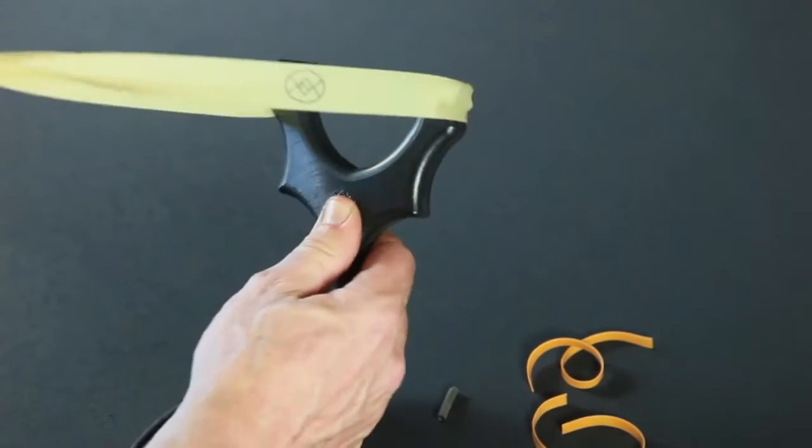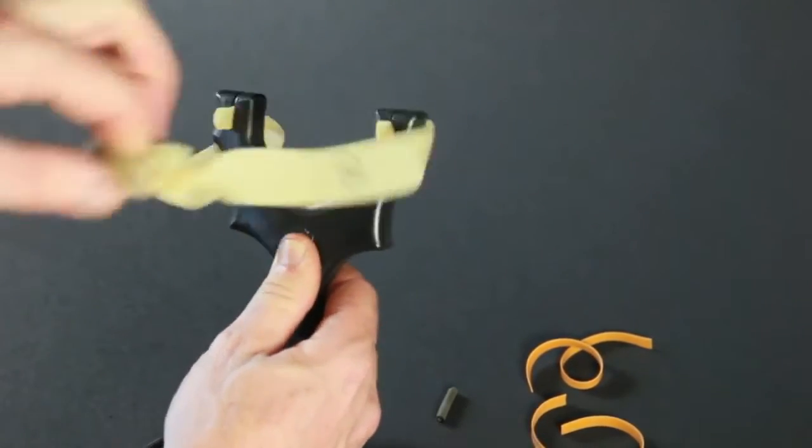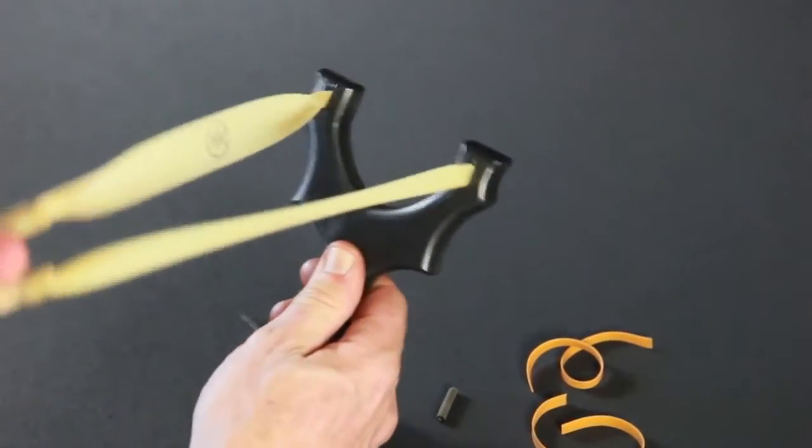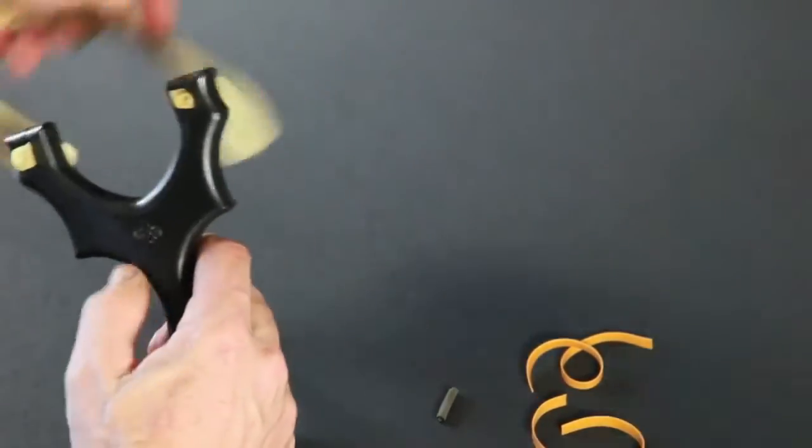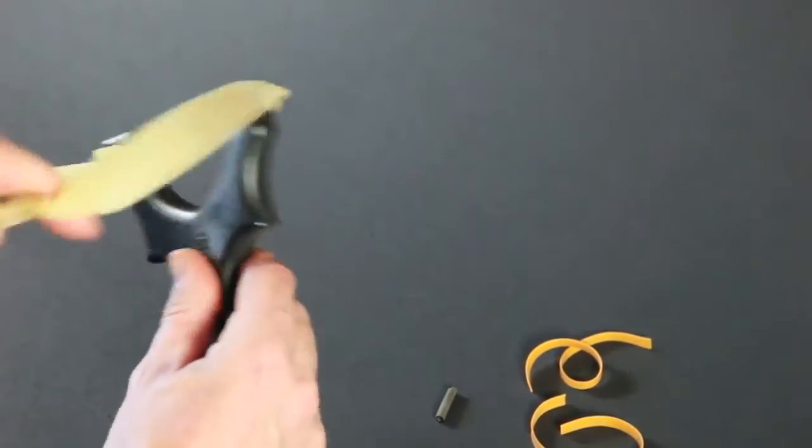So when the bands are drawn, they track into those grooves. If you were to pull it this way, they would pop right out. But by bringing the bands around, it's a very solid and secure attachment method.